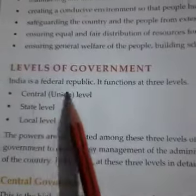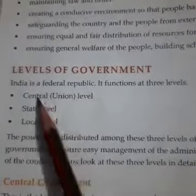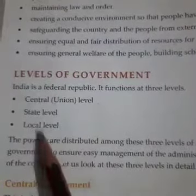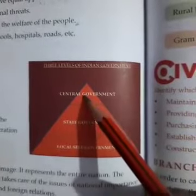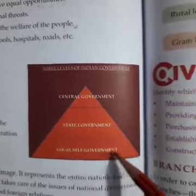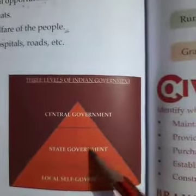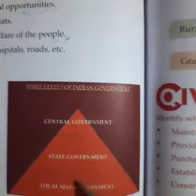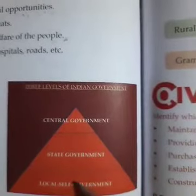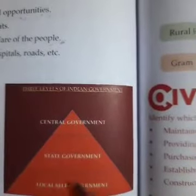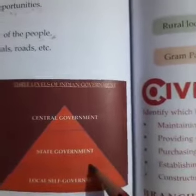Now the next heading is levels of government. India is a federal republic and functions at three levels: central or union level, state level, and local level. The powers are distributed among these three levels of government to ensure easy management of the administration across the country.